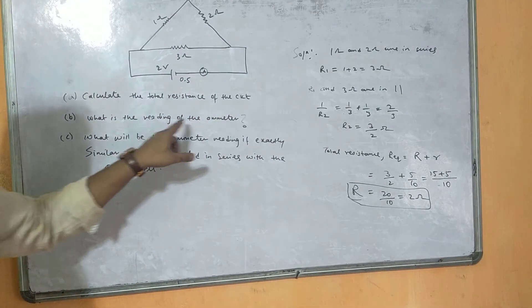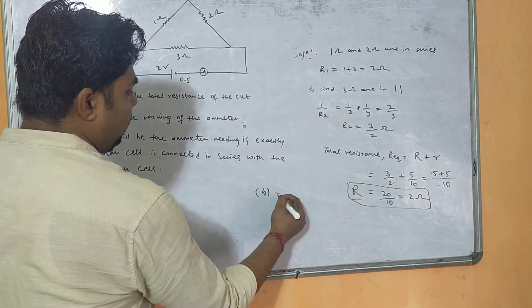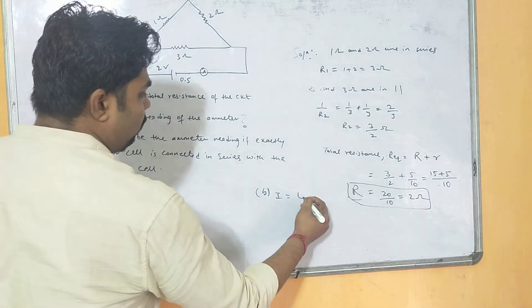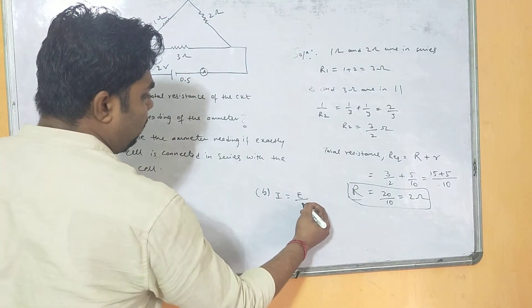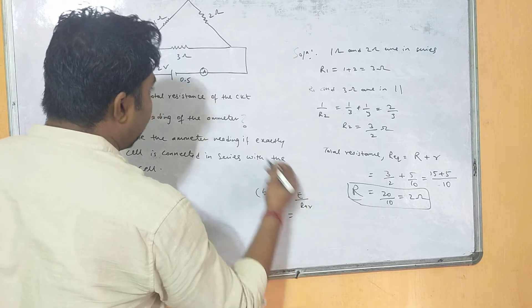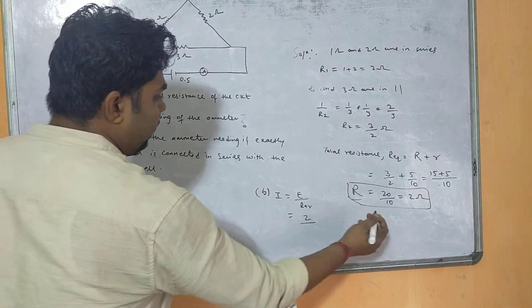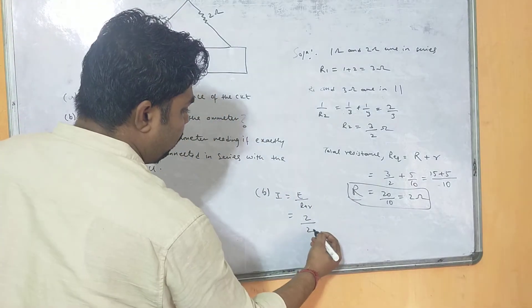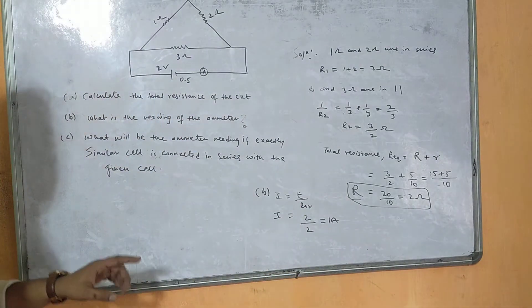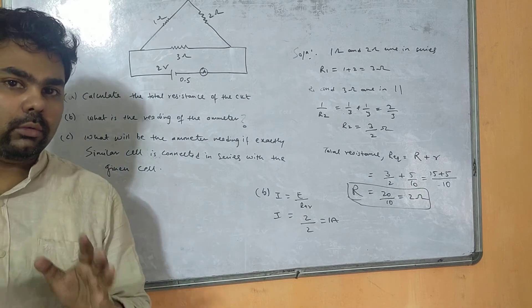Reading of the ammeter: I = total EMF / total resistance = 2/2 = 1 ampere. So 1 ampere of current is passing through the circuit.